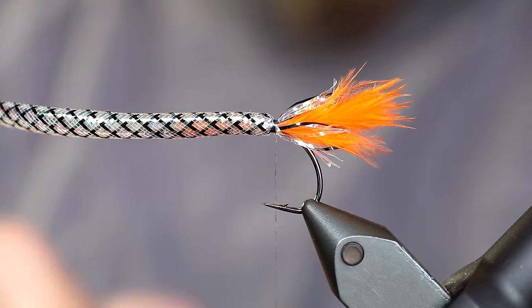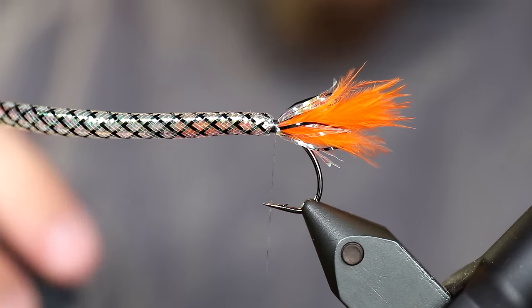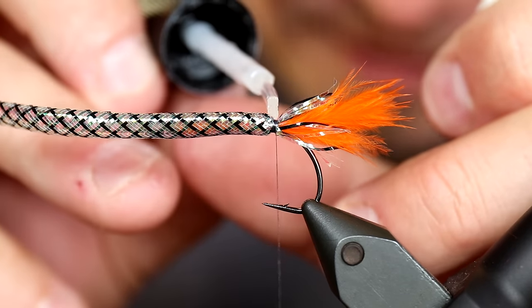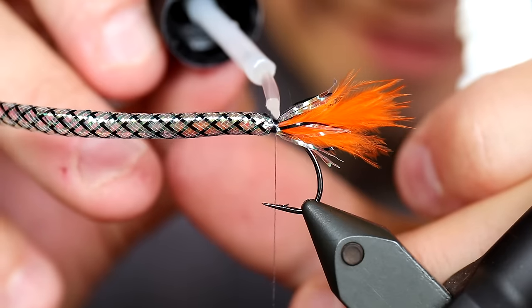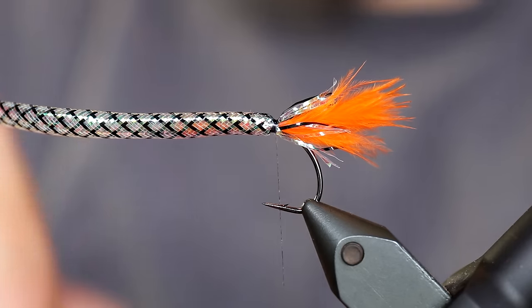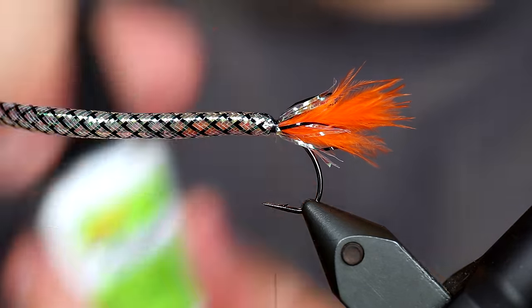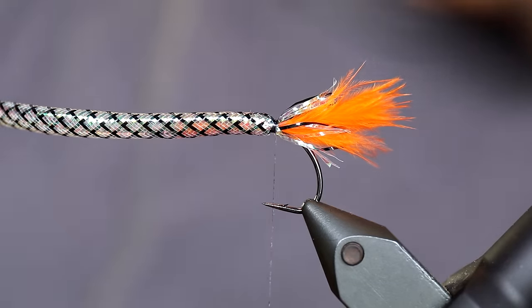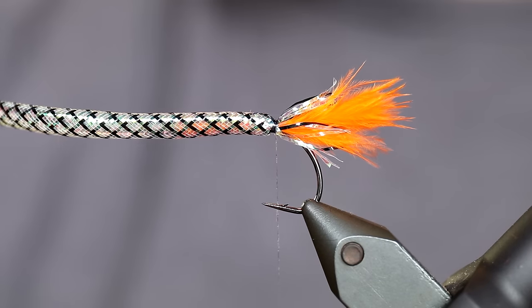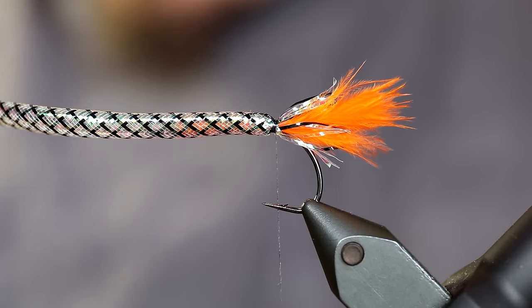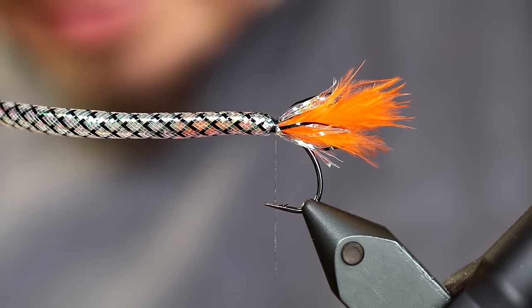And what I want to do here is to make sure that this stays exactly where I placed it. So I'm gonna add a bit of the brush-on superglue. Something that also is a very nice product that really works. Good. Next up I'm gonna take some rabbit. Some rabbit zonker.